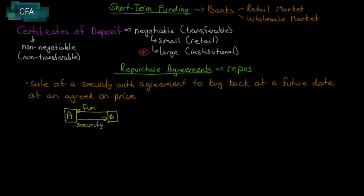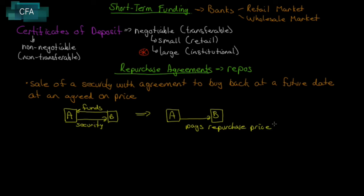You're not pawning a guitar but pawning a security. Party A will sell a security to B, and B will give funds to A — that's step one. B buys the security knowing there's already a repurchase agreement in place. At the end of the term, A pays the repurchase price — the original loan plus interest — which equals the original loan multiplied by one plus the repo rate.